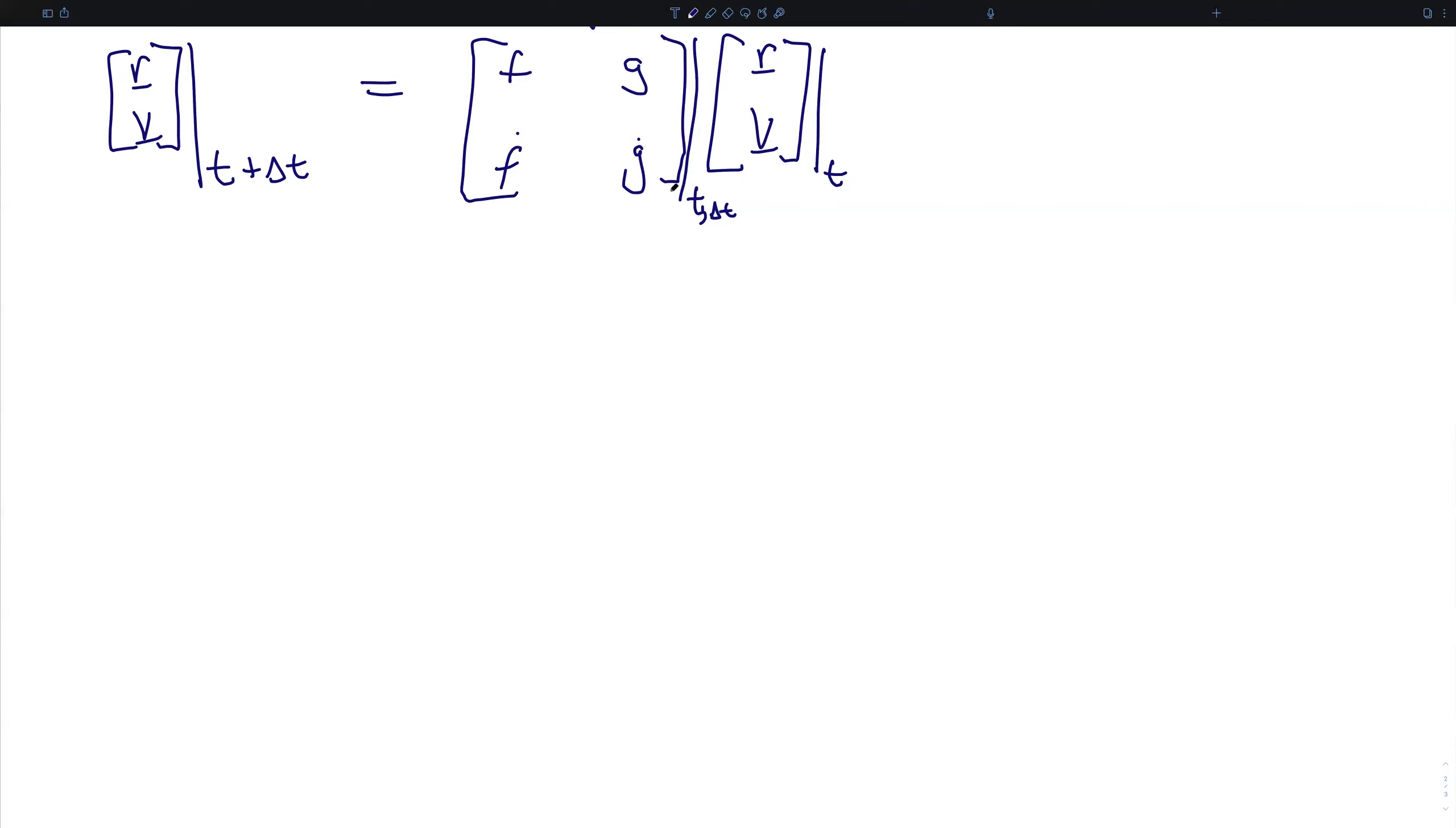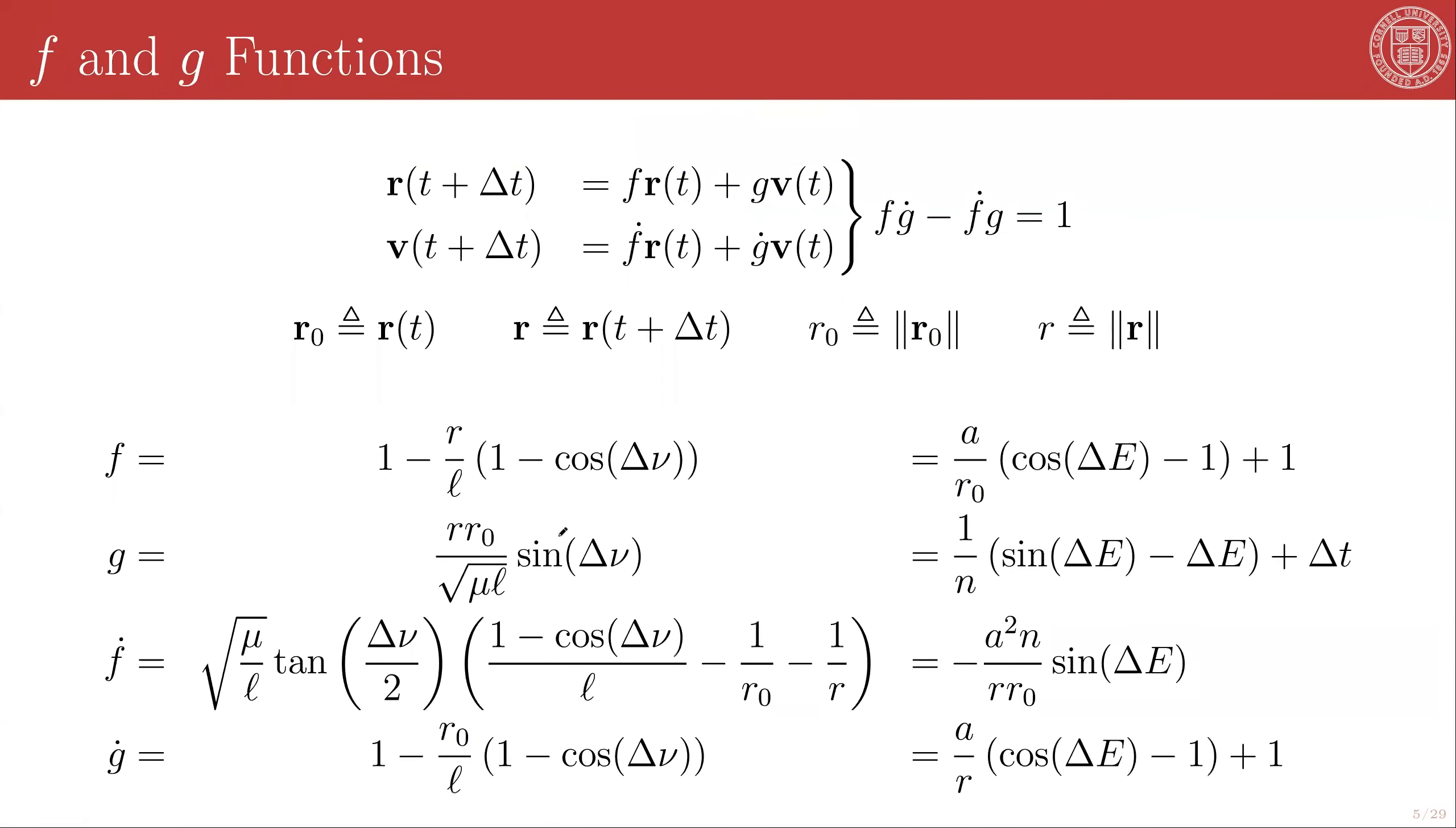And again, seemingly, this is very cool, but we can't get away from the transcendental nature of Kepler's time equation. We have hidden away the fact that we have to invert something numerically, but it's in there. And you can see that because you need to know the final orbital radius and the change in true anomaly, or equivalently, the change in eccentric anomaly, in order to calculate these f and g functions. So at the end of the day, what is it that we've gained? We still apparently have to go through all of the numerical machinery. So this is a nice way of packaging things, but we haven't necessarily made any real progress.